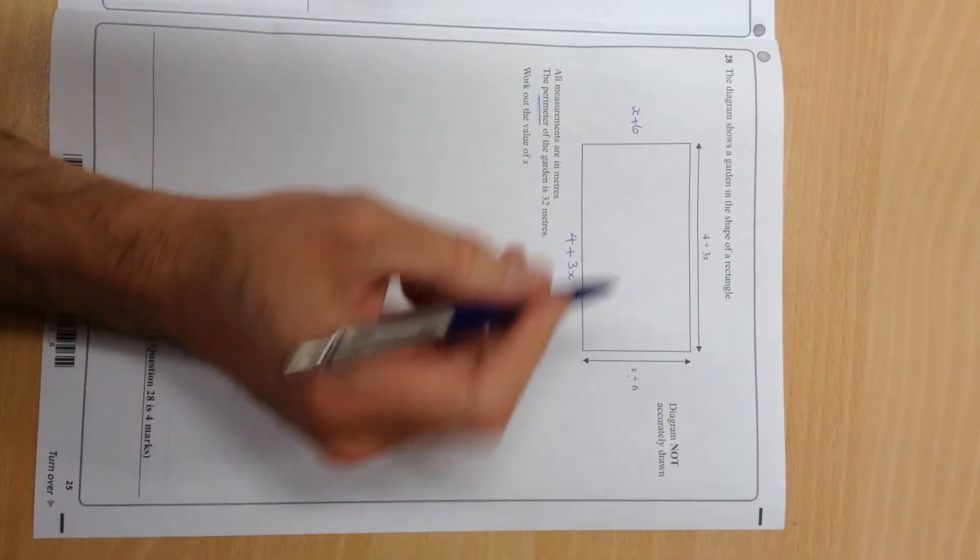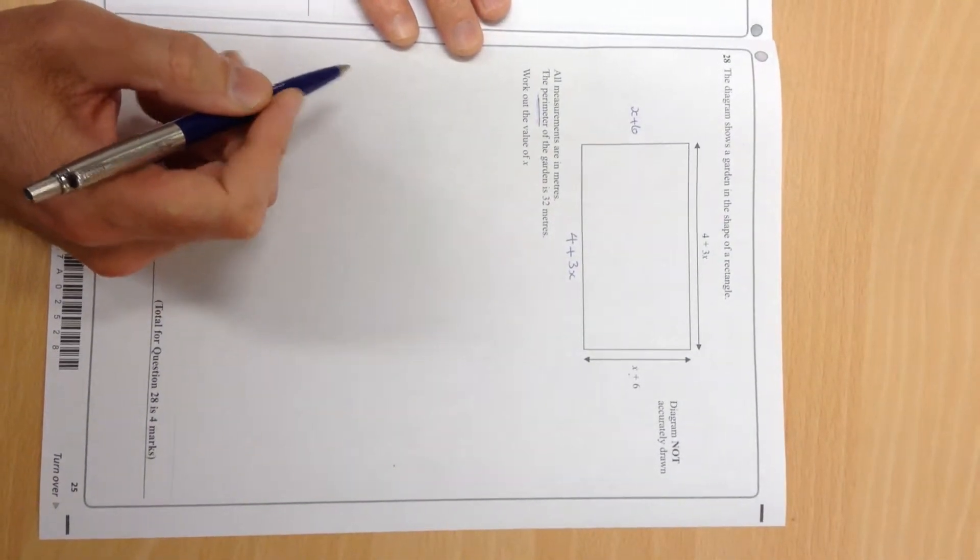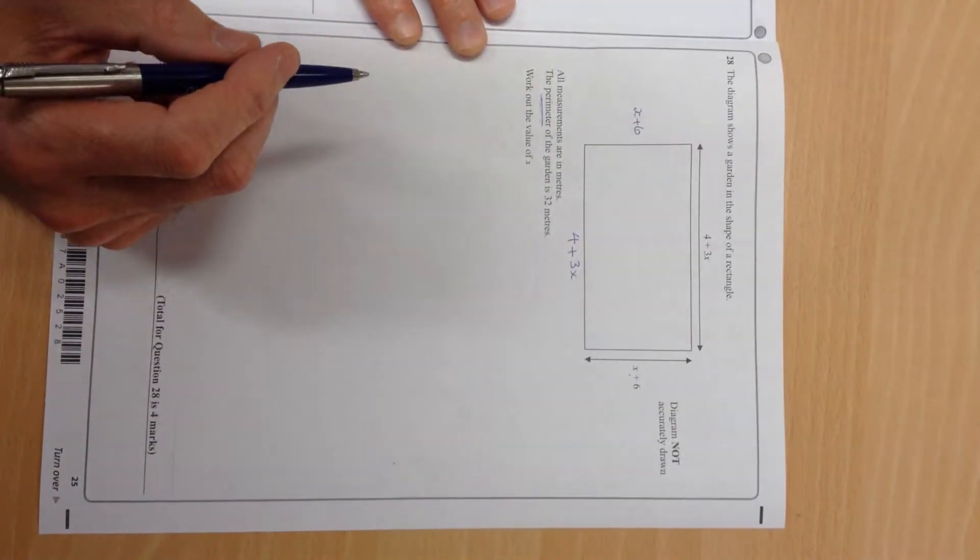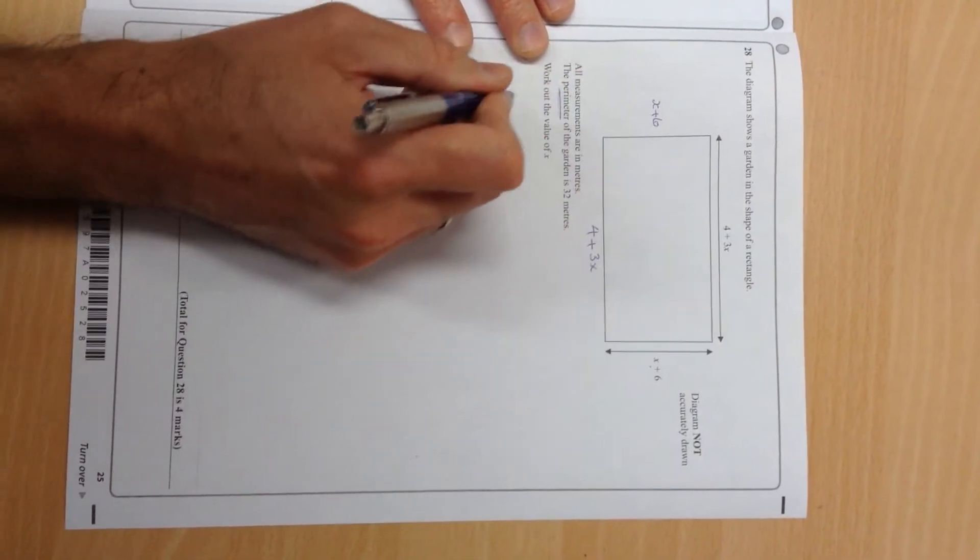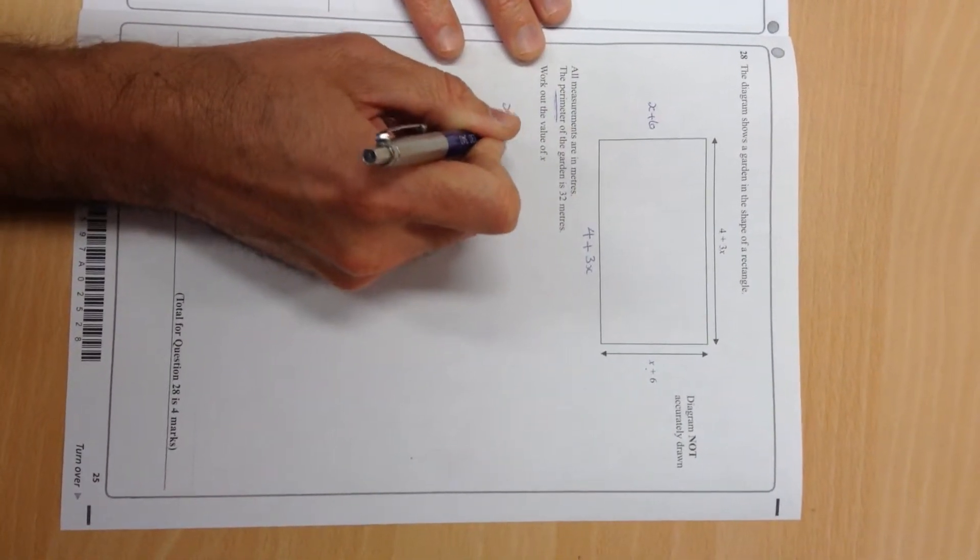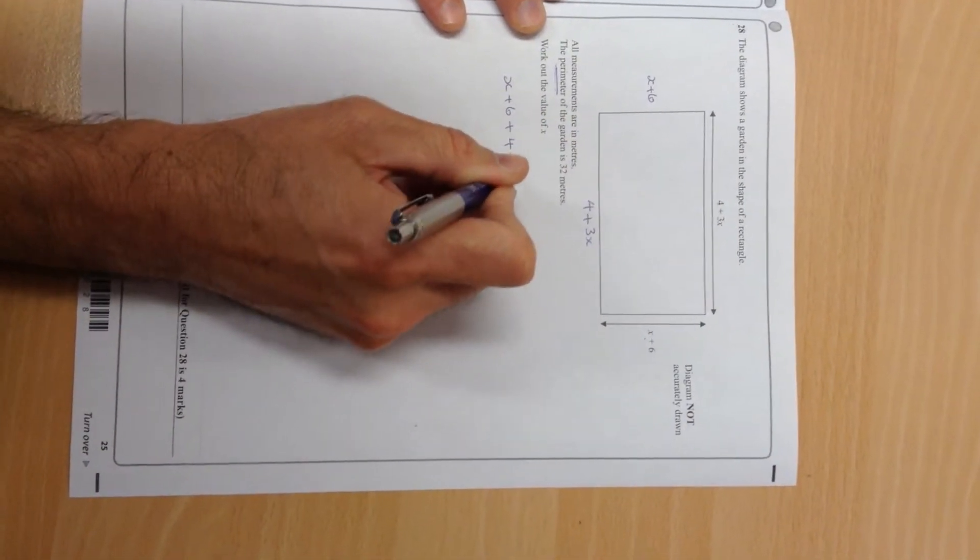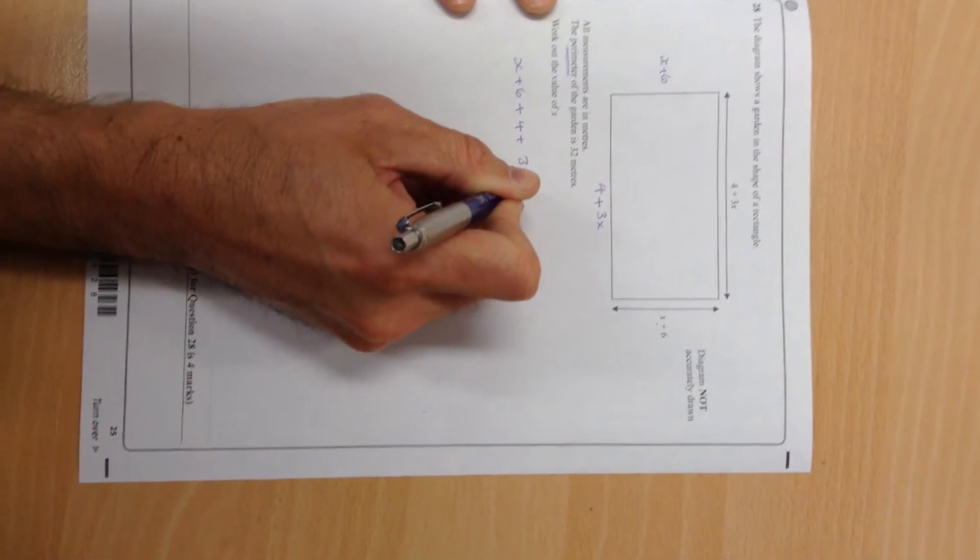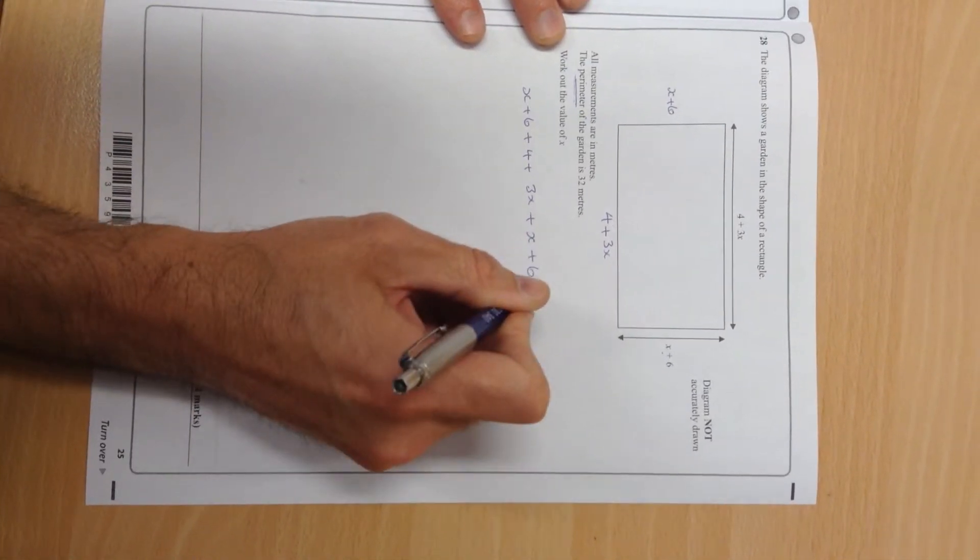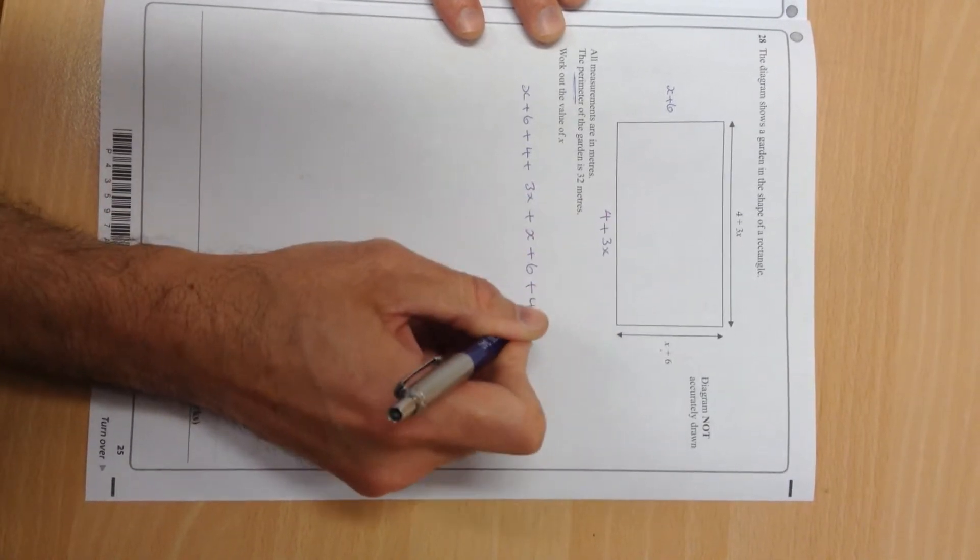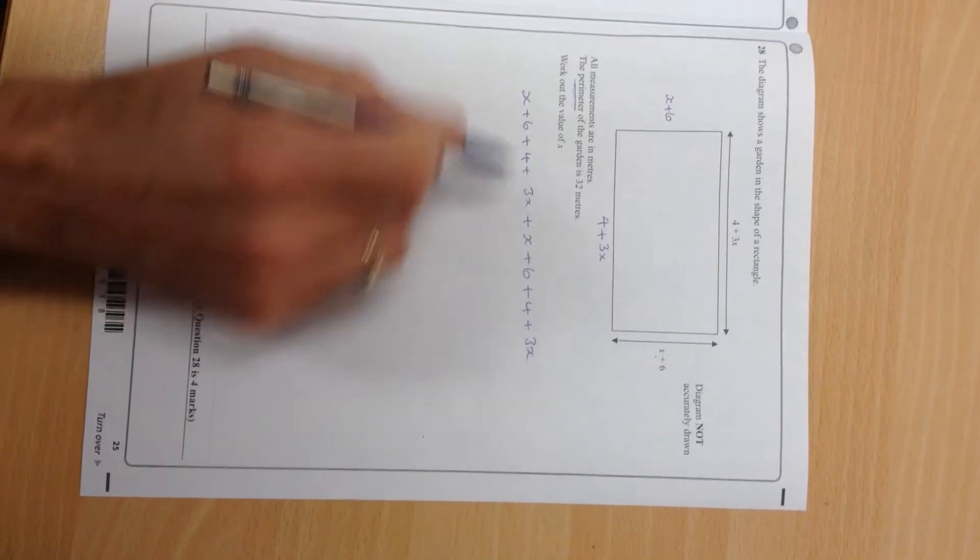Okay, so now what we have to do is add them all up to get the perimeter. I'm going to do it the long way, so here we go. I'm going to start with that one: x plus 6, plus 4, plus 3x, plus 6, plus 4, plus 3x. There are shorter ways, but that's the long way.